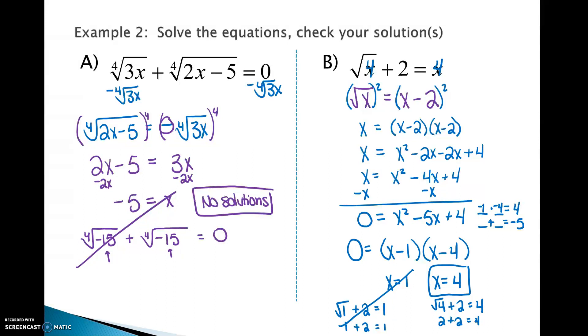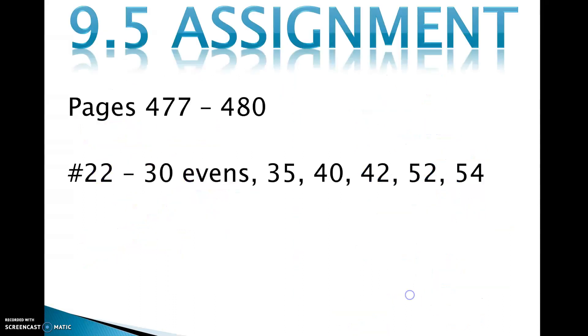Your assignment today, we are going to slightly change what was on the assignment sheet. We're still going to do 22 through 30 evens and 35. Instead of 40, we are going to do 38. We are going to do 42, but then not 52 and not 54. And we are going to do 24 and 43.